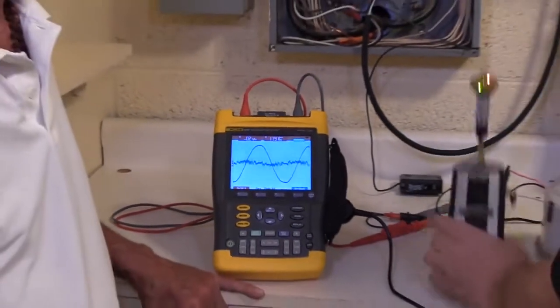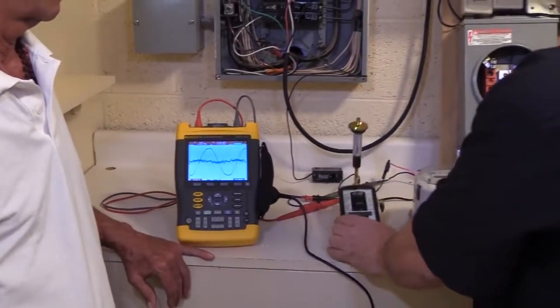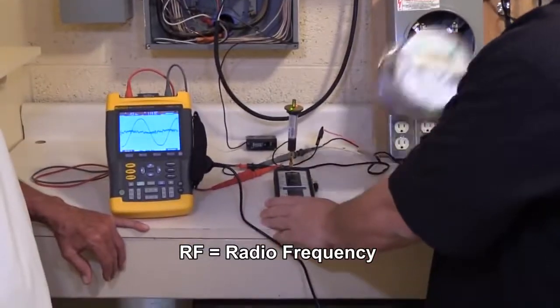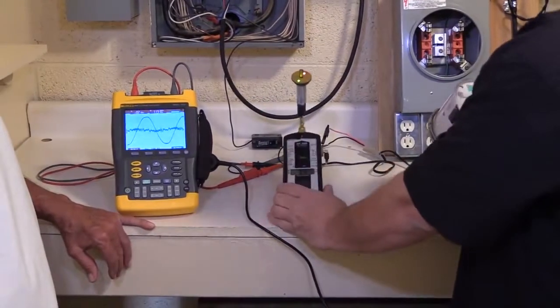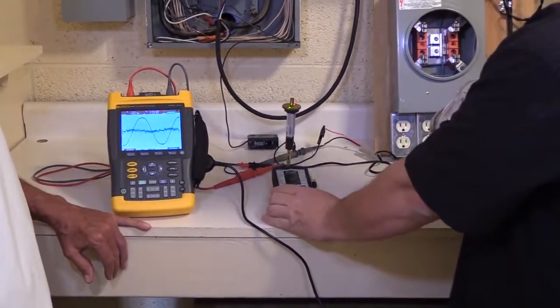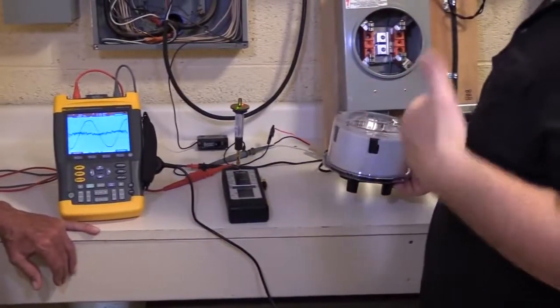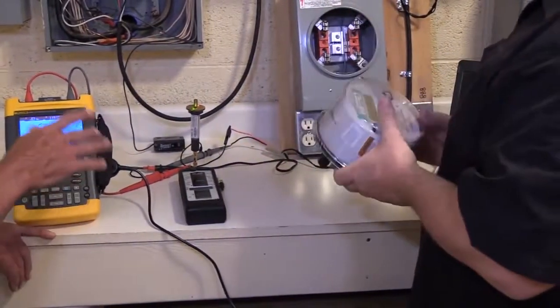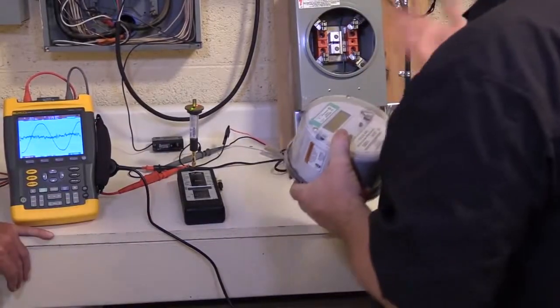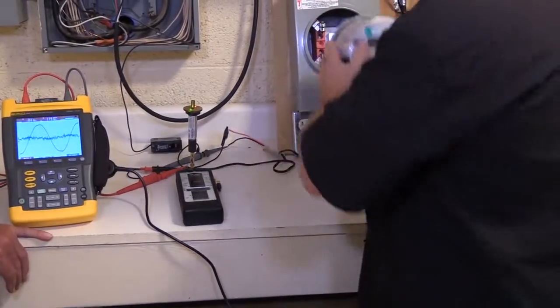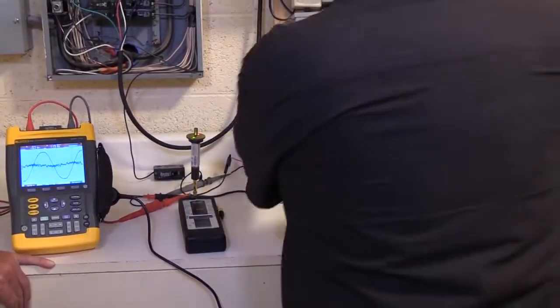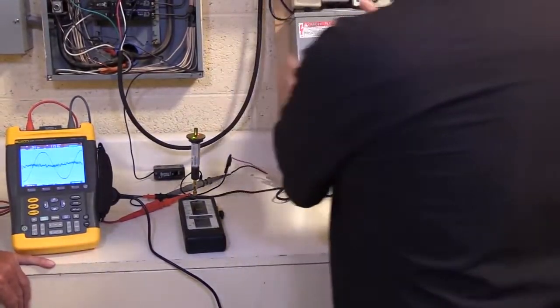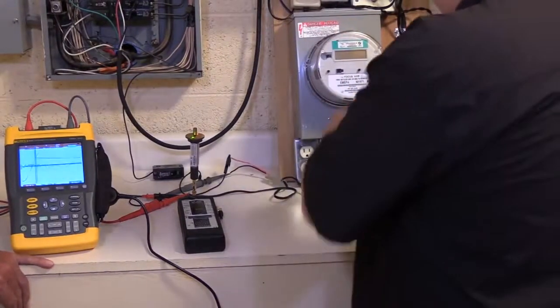All right, so to measure RF transmitting from the smart meter, we're using the HF59B from Gigahertz Solutions, and you'll hear when it transmits. So I'm going to just attach... You'll hear like little ticks. You'll hear a distortion, all right? So we're going to attach this to the panel.